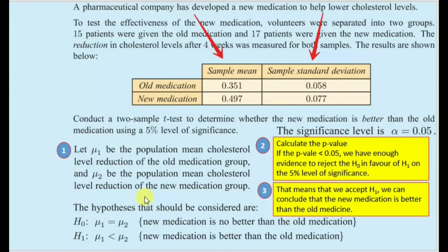Next, we have to state the hypotheses. The null hypothesis H0 is where mu 1 is equal to mu 2, meaning the mean of sample 1 equals the mean of sample 2 — the new medication is no better than the old medication. The alternative hypothesis H1 is where mu 1 is less than mu 2, which means the new medication is better than the old medication.